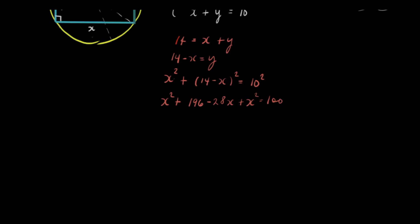And then let me change the color. This will become 2x squared, 2x squared minus 28x and then 196 minus 100, that will become positive 96.